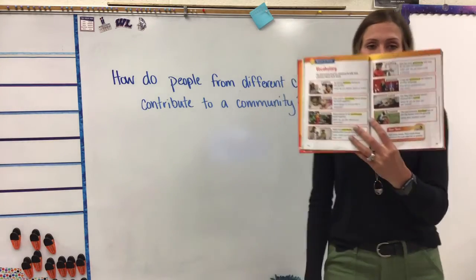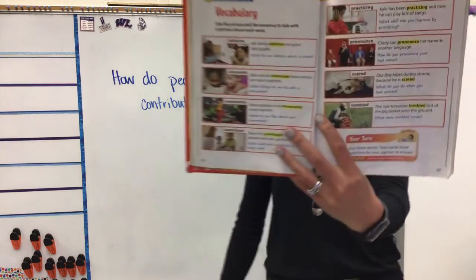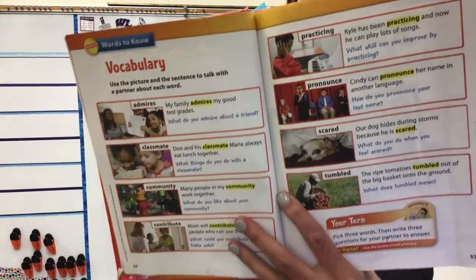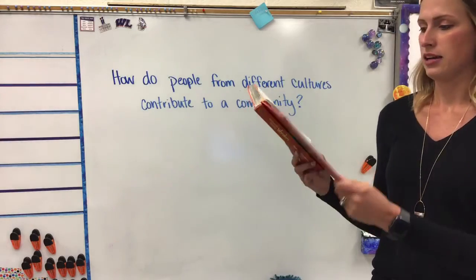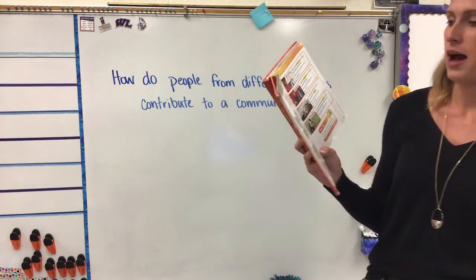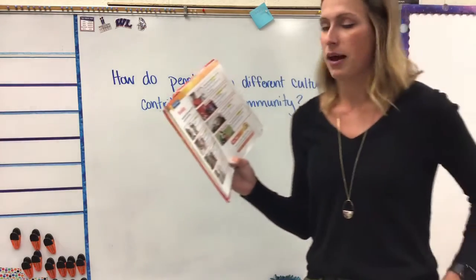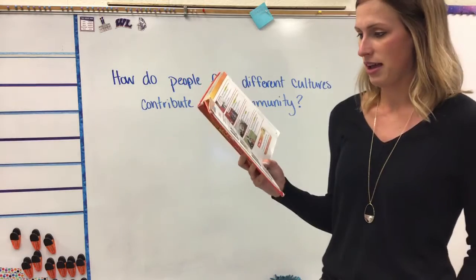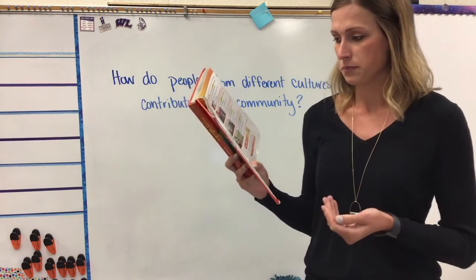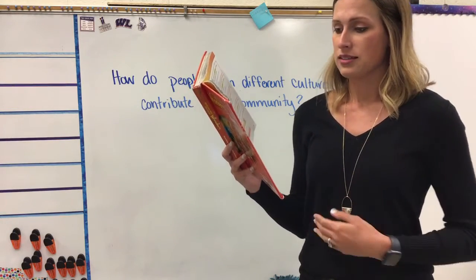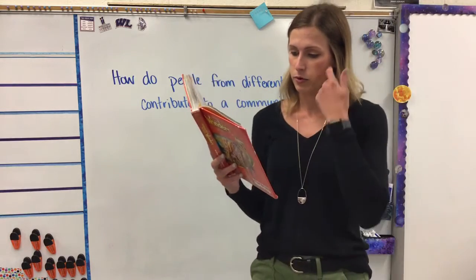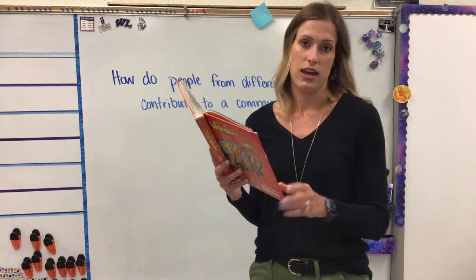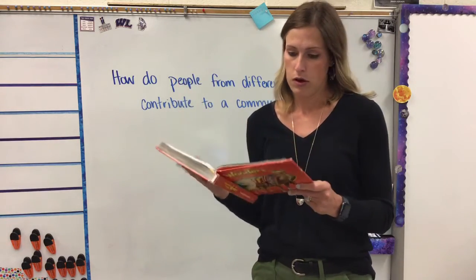Turn your page. We've got eight new vocab words that we're going to learn this week as we study our stories. The first word is admires. 'My family admires my good test grades.' Admires means to think highly of something. Second word: classmate. 'Don and his classmate Maria always eat lunch together.' Maybe you can think about something that you always do with one of your classmates.